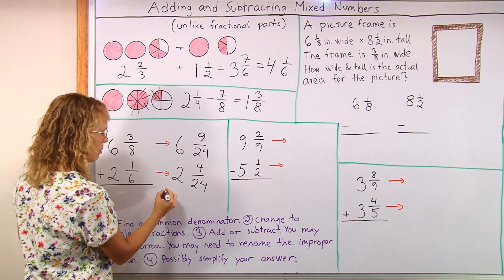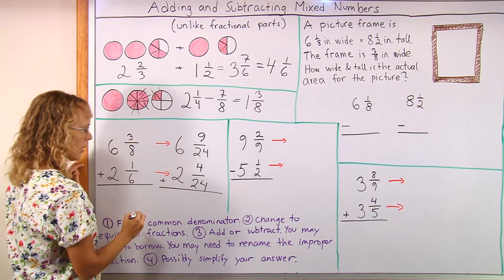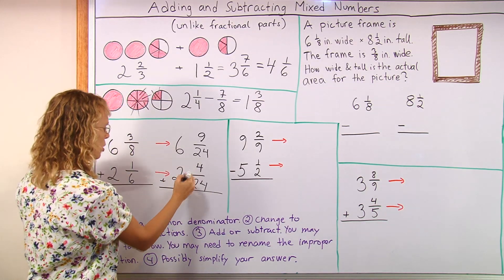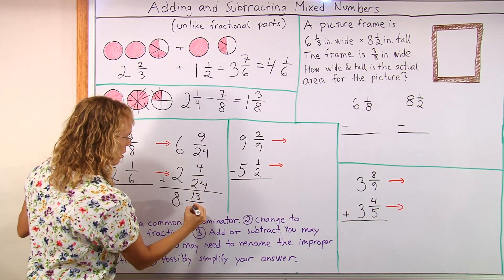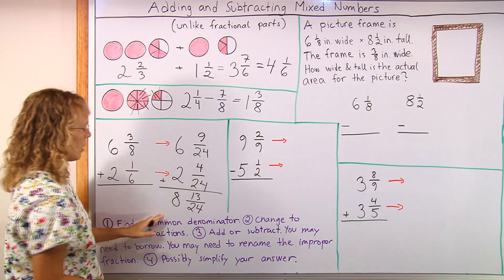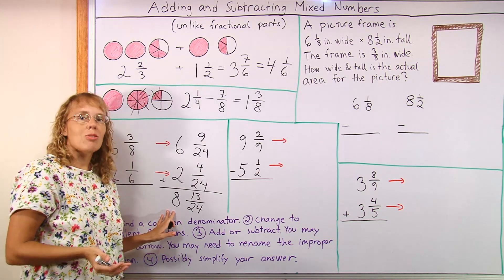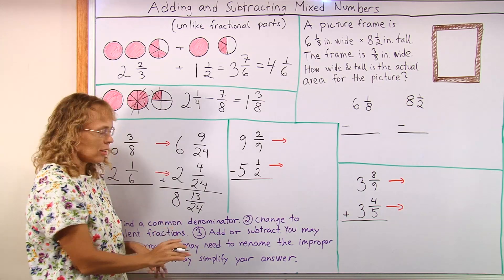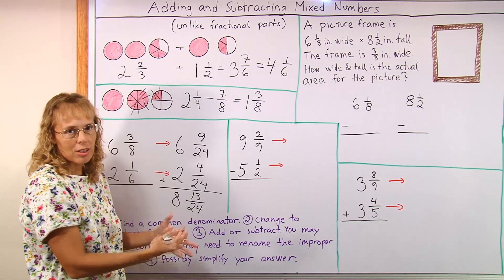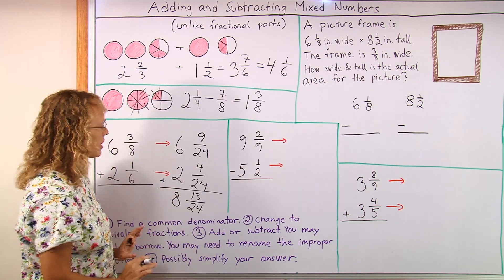And now we're ready to add. Here I can add six plus two is eight and here nine plus four is 13 over 24. We don't need to do anything else to this answer because it does not simplify and also the fraction here is a proper fraction. It's less than one so we are not going to get one more whole pie or anything. That's done.